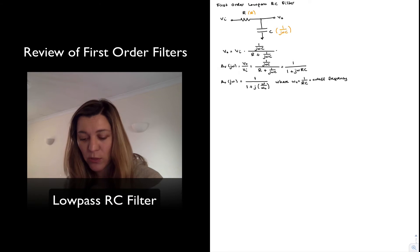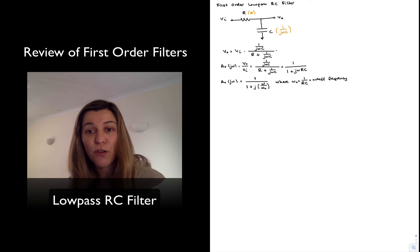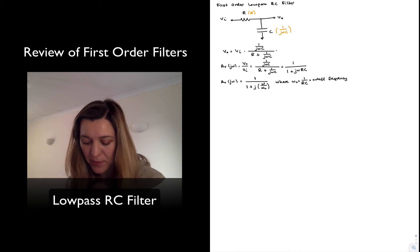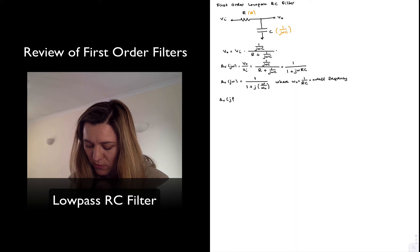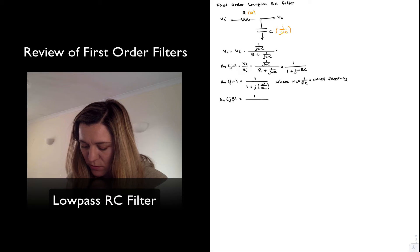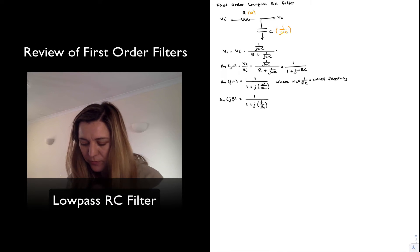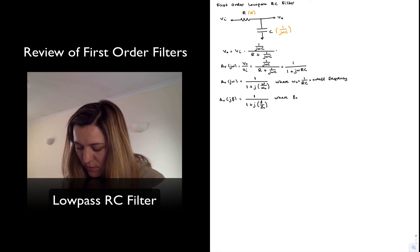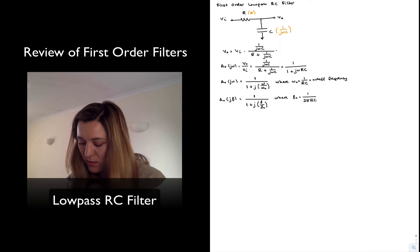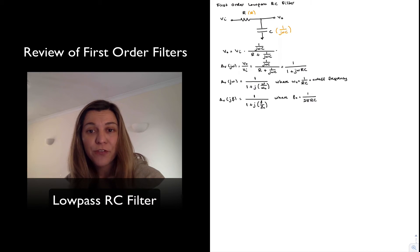This is sometimes also referred to as the corner frequency. I'm going to rewrite this expression as a function of f instead of omega. Since omega and f are related by a factor of 2 pi, I can rewrite the transfer function as 1 over (1 plus j f divided by fc), where fc is equal to 1 over 2 pi RC. That is the cutoff frequency expressed in units of Hertz, as opposed to radians per second for omega.